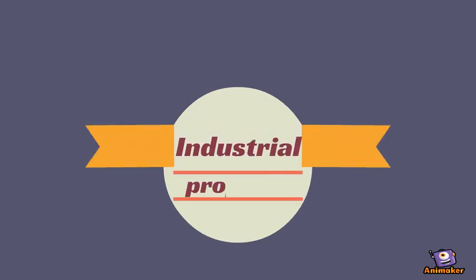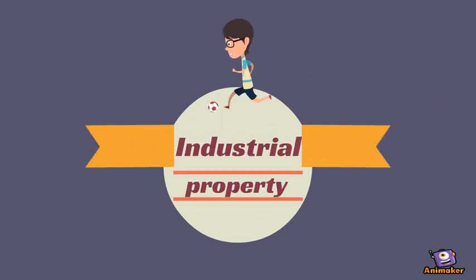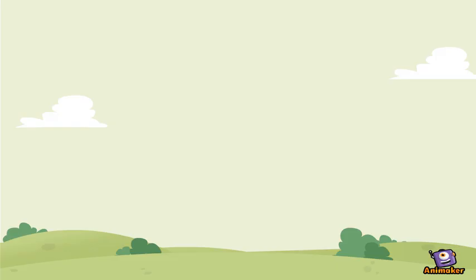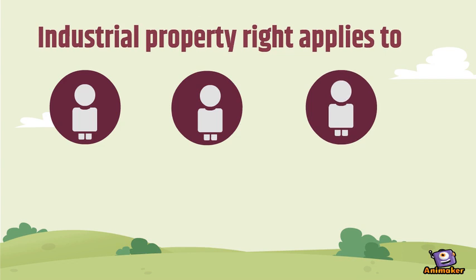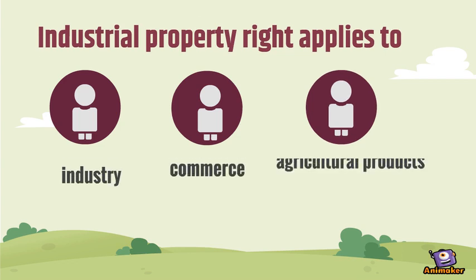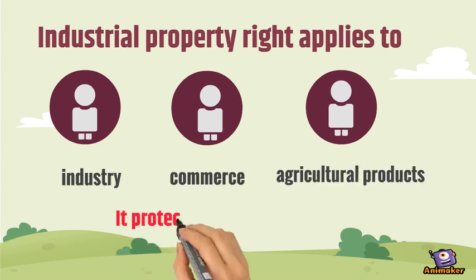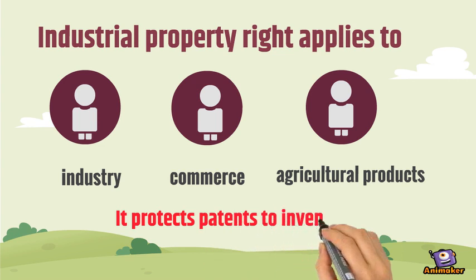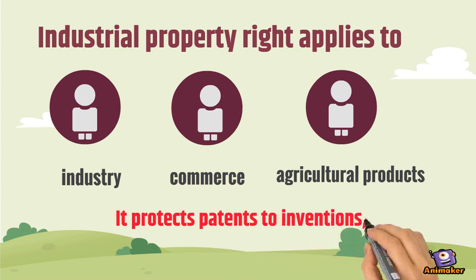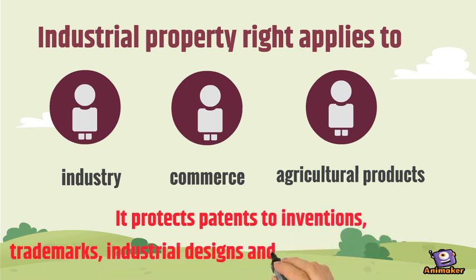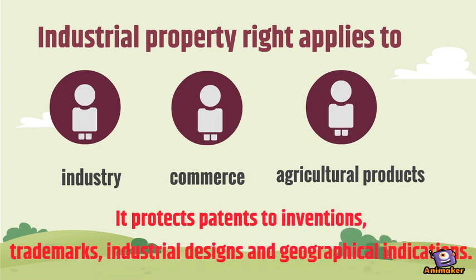Industrial property rights apply to industry, commerce, and agricultural products. It protects patents to inventions, trademarks, industrial designs, and geographical indications.